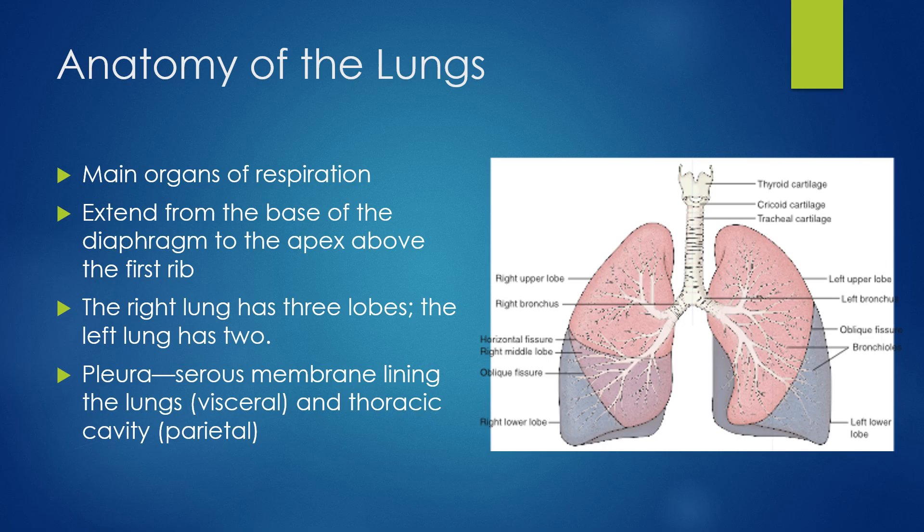The lungs take up the majority of our chest cavity, extending from the base of our diaphragm all the way up to the top of our chest, just above that first rib. The lungs are covered with a serous membrane called the pleura. There's another layer of pleura that lines the thoracic cavity as well, and in between the lung pleura and the thoracic cavity pleura, there's a small amount of fluid like a lubricant, and we call that area the pleural space.